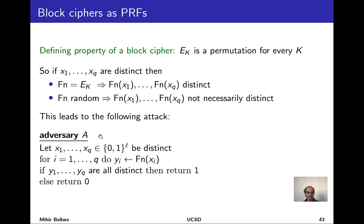Let's give that attack. The adversary picks Q distinct blocks as input, then queries each one to its oracle. Its goal is to tell whether the y sub i's are coming from the real world or the random one. It knows that in the real world they would all be distinct. So if they are distinct, it bets on the real world; if not, it bets on the random world. Notice that if they're not distinct, that's for sure the right answer. But if they are distinct, you could be in either situation, and this is why some analysis is needed.